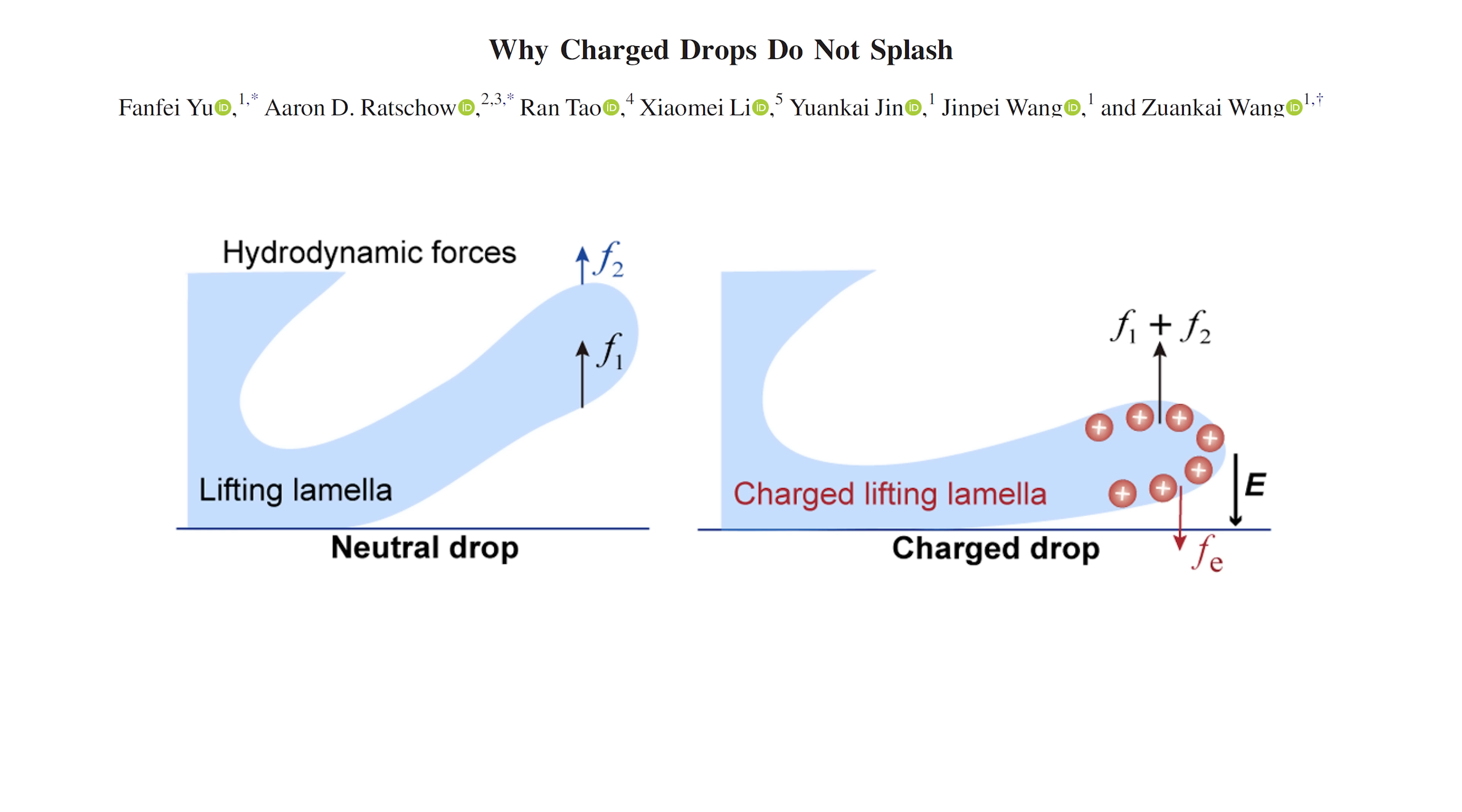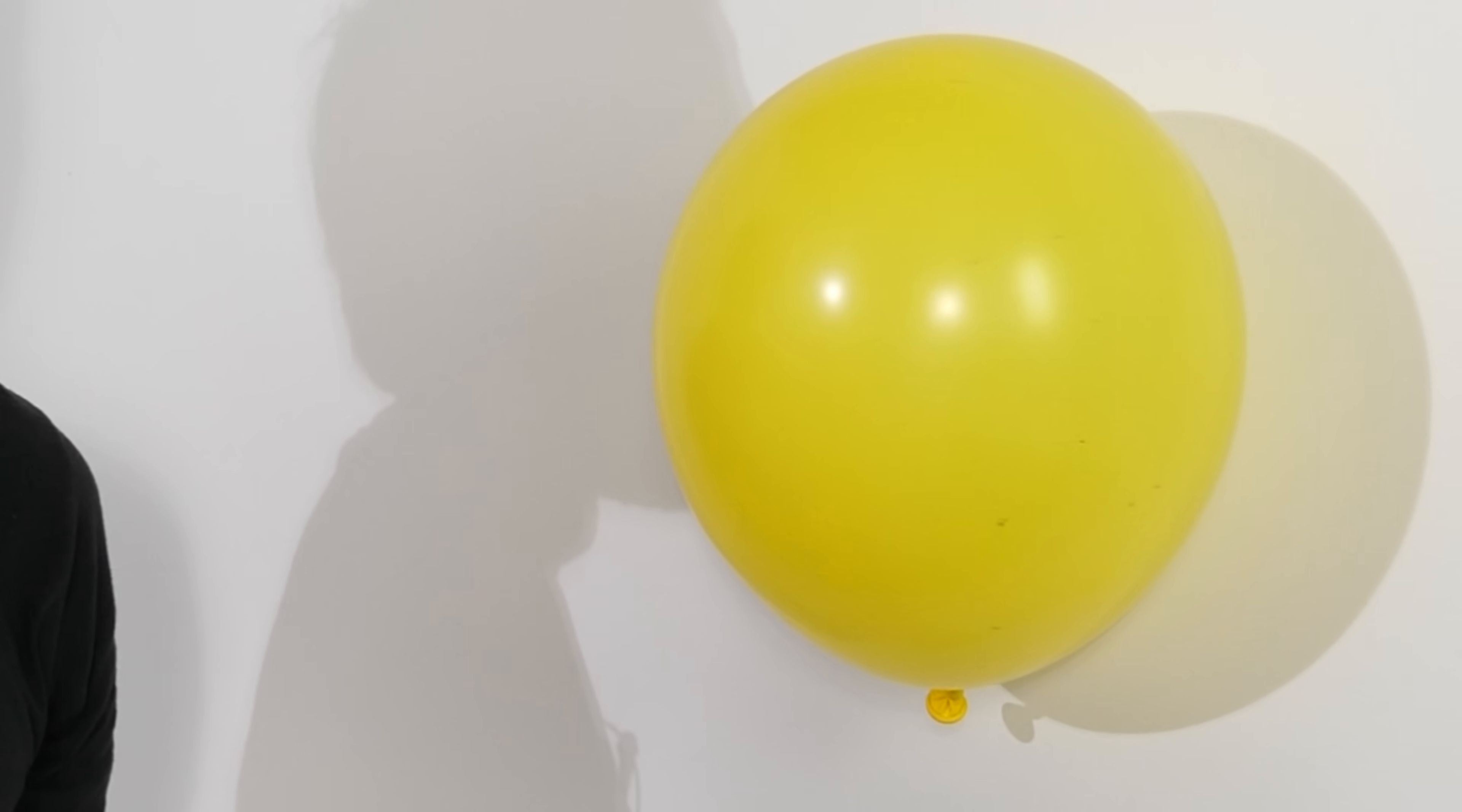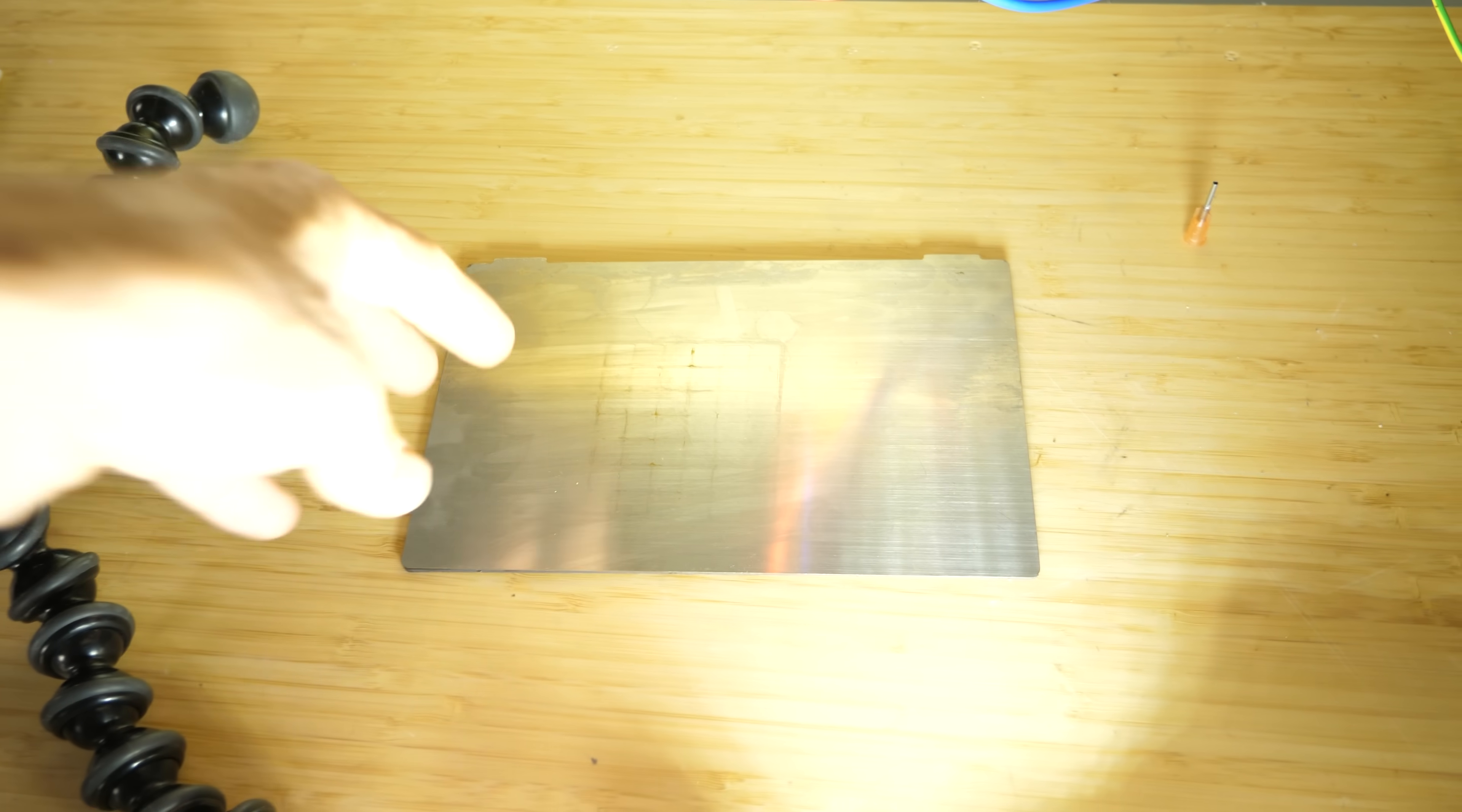The charges are attracted to the surface because we're dropping them on glass. Glass is a dielectric. So when you put something that's charged near a dielectric, it pulls the charge toward it because the dielectric molecules rotate and point their opposite end charge towards the charge. This is the same reason a charged balloon can stick to a neutral wall. So this electric force pulls the lamella down and makes it just glide across the surface.